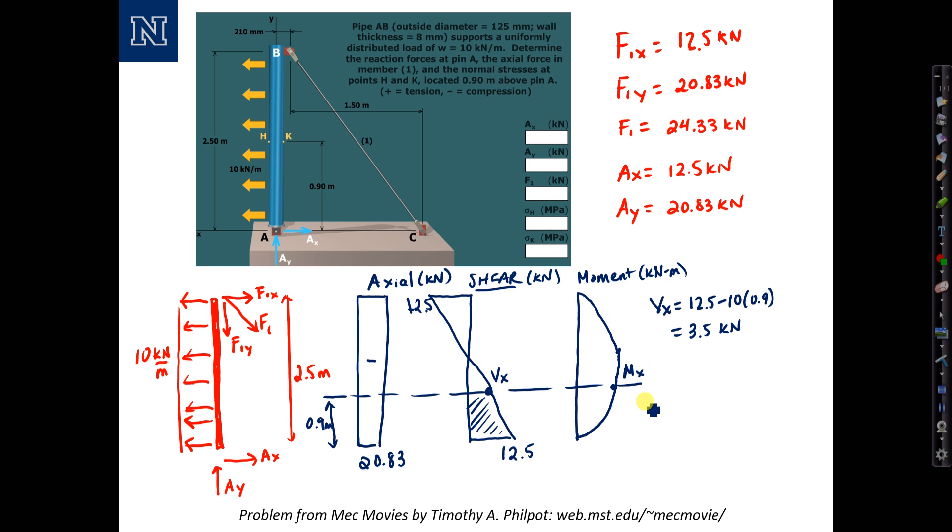Then the moment m sub x is the area of the trapezoid with endpoints 12.5 and 3.5, computed as one half the sum of the endpoint values 12.5 plus 3.5 times the length 0.9 and that computes to 7.2 and the units are kilonewton meters.